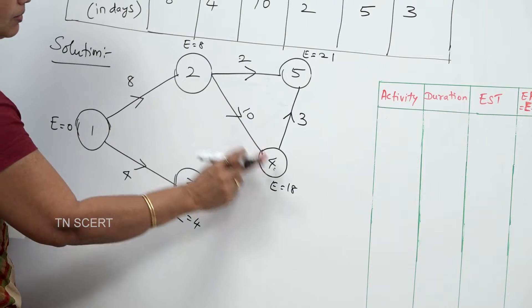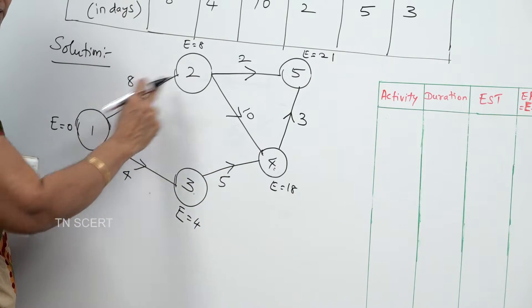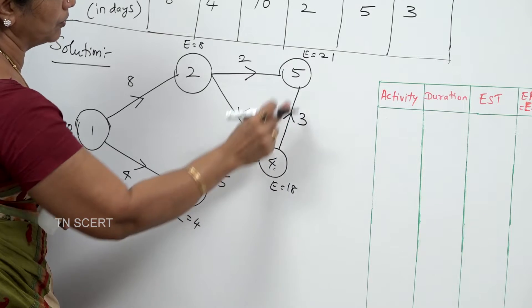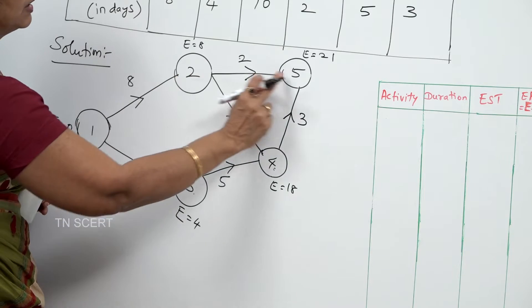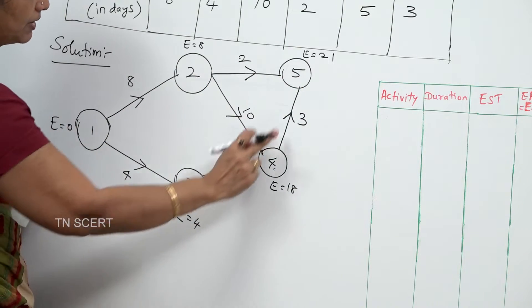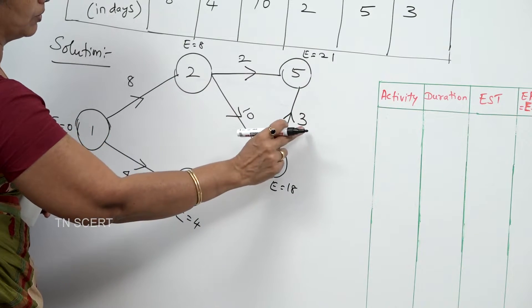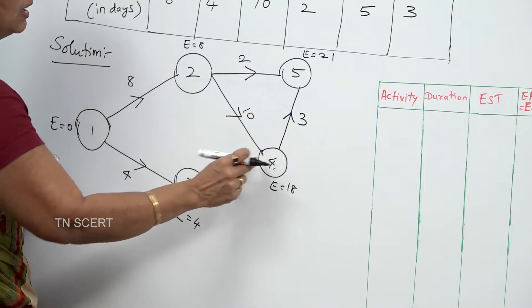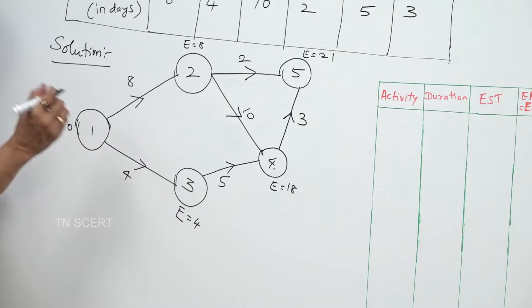Now let's evaluate all routes. Route via 4→5 gives 21 days. If you say that is greater than 21 — therefore this route is correct. The maximum mark on the route gives us the critical path. Route 1→2, 2→4, 4→5 is critical because it gives the maximum duration of 21 days.